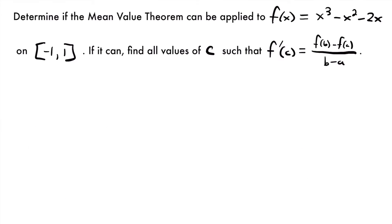Let's look at another example. For our next example, we want to do the same thing — we want to see if we can apply the mean value theorem to this function f of x equals x cubed minus x squared minus 2x on this interval from negative 1 to 1. And if we can apply it, we want to solve for those values of c. The first thing we want to do is check for differentiability and continuity. Just like the previous problem, this is going to be a continuous function on this interval. Polynomials like this are going to be continuous everywhere.